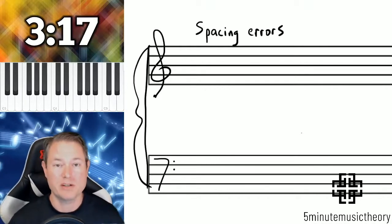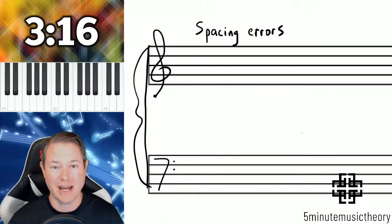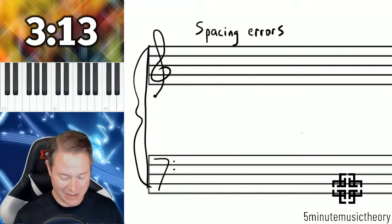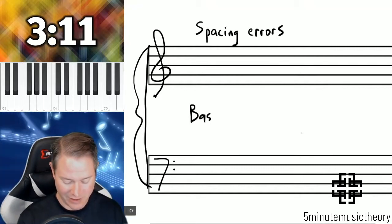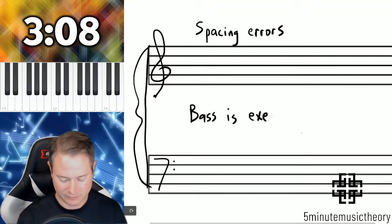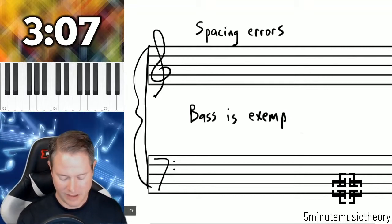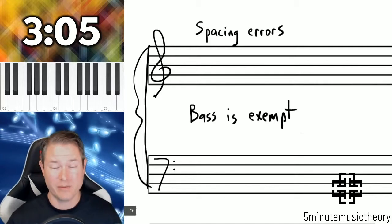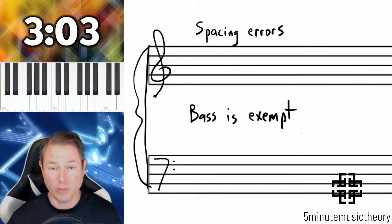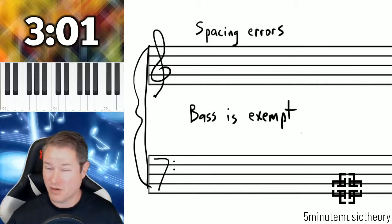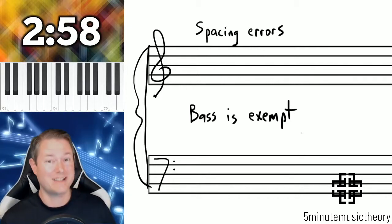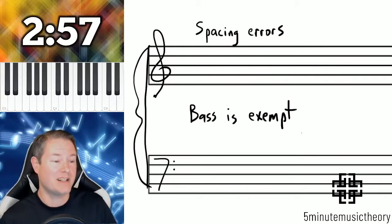There's one exception to the spacing error rule, and that is the bass. The bass is exempt from this. The bass can be as far away from the tenor as it needs to be, because the bass really does its own thing and it determines the inversion of the chord. So the bass is exempt from spacing errors.